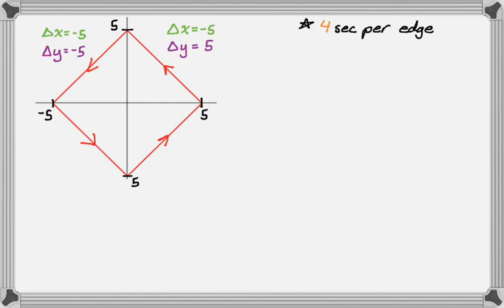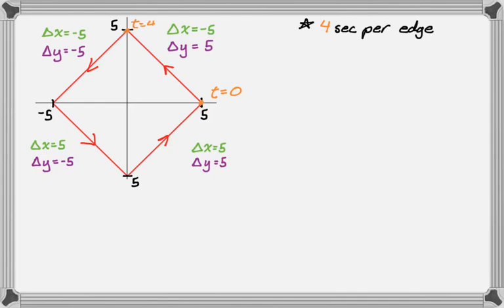On the third edge, x goes from negative five to zero, so delta x is positive five, and y goes from zero to negative five, so delta y is negative five. On the final edge, x goes from zero to five, delta x is positive five, and y goes from negative five to zero, delta y is positive five. Delta t is four seconds per edge. Starting at (5, 0) at t equals zero, we reach the next corner at t equals four, then t equals eight, t equals twelve, and back to the start at t equals sixteen.